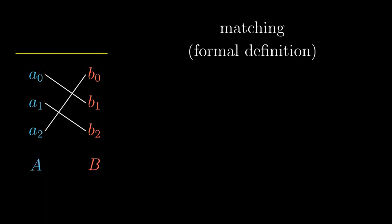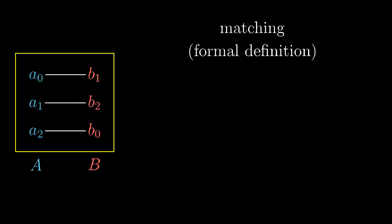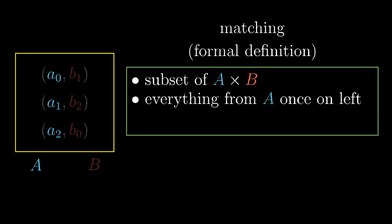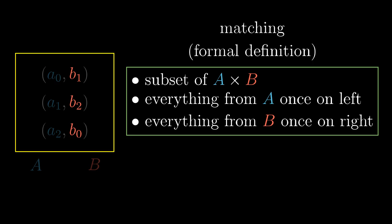Formally, a matching is the set of connections between sets A and B. What is a connection? An ordered pair. So matching is a subset of the Cartesian product A times B. Of course, not any subset of the Cartesian product is a matching. It is defined as such a subset of the Cartesian product such that every element of set A is at exactly one left position and every element of set B is at exactly one right position. That is the entire formal definition of a matching.